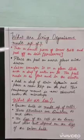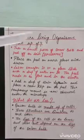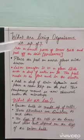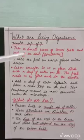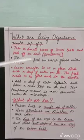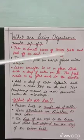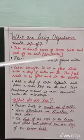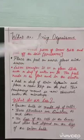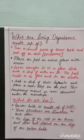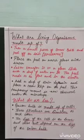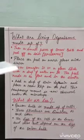What are living organisms made up of? Well, let's find out. Take a small piece of the onion bulb and peel its skin off. This happens to be the epidermal portion. A forceps may be used to carry out this process. Then, place the peel on a watch glass with water.